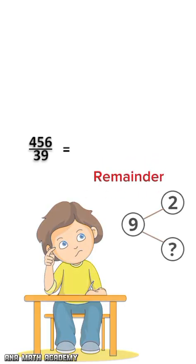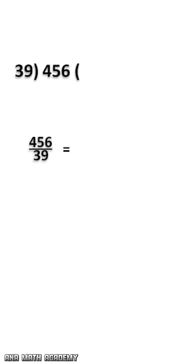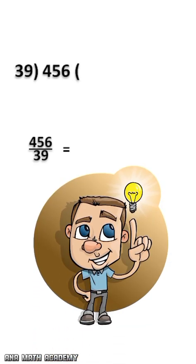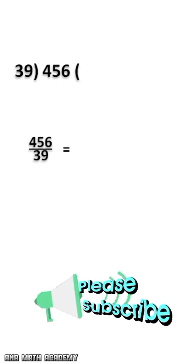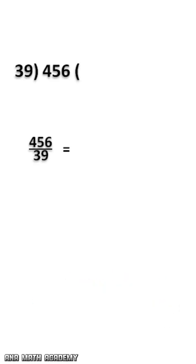Usually people go straight into long division but let's use a smarter approach through factoring and simplification. First, we break both numbers and try to find the highest common factors.